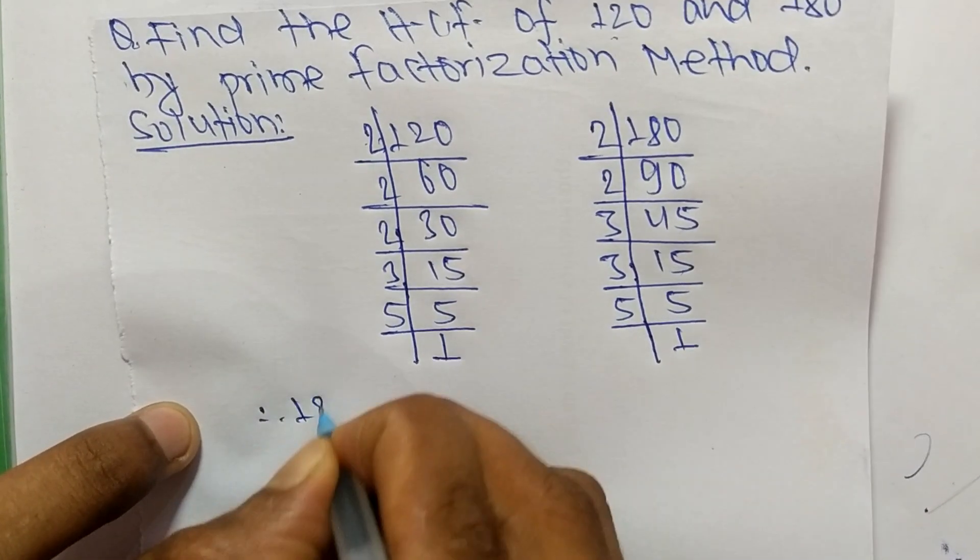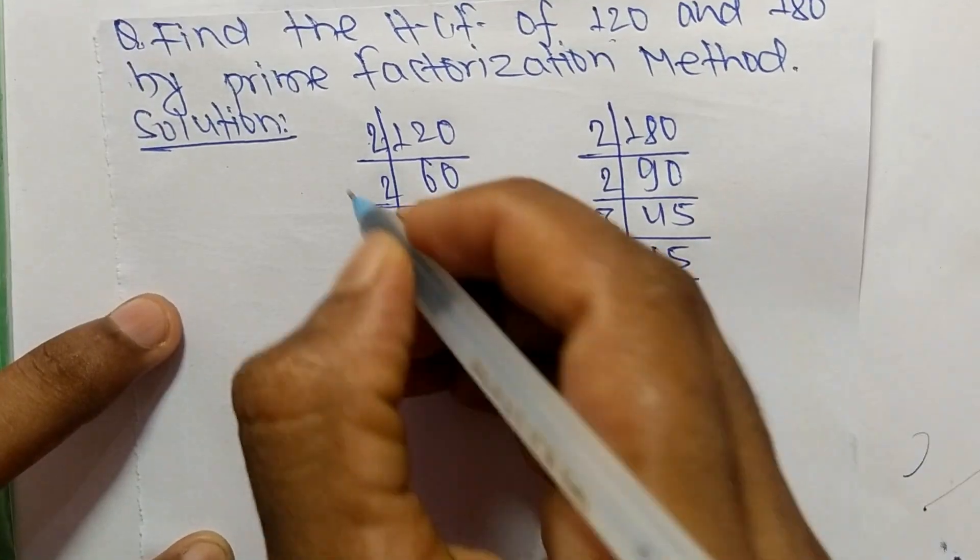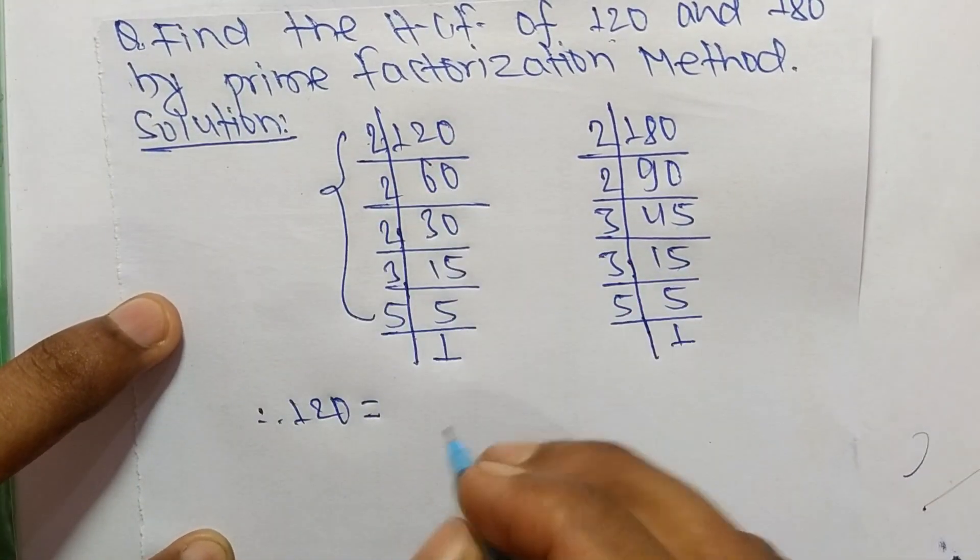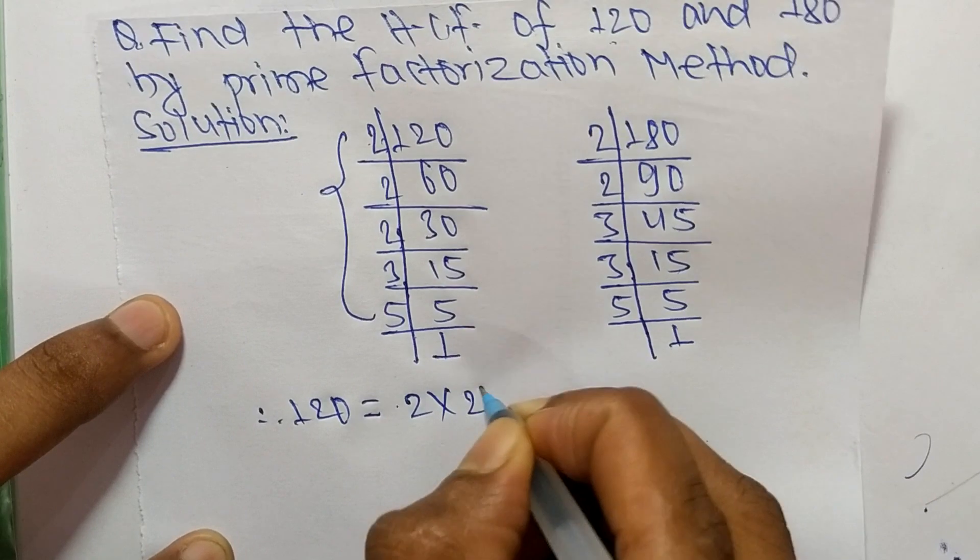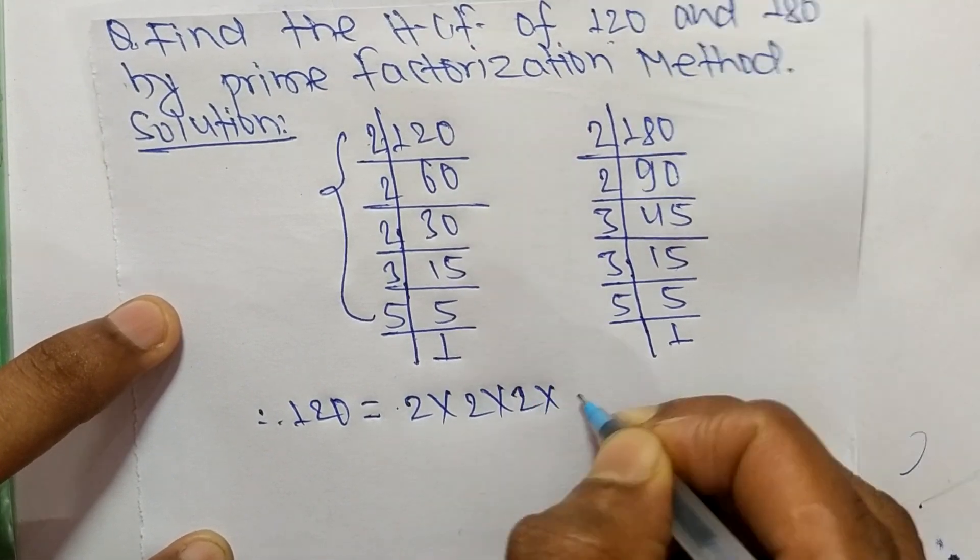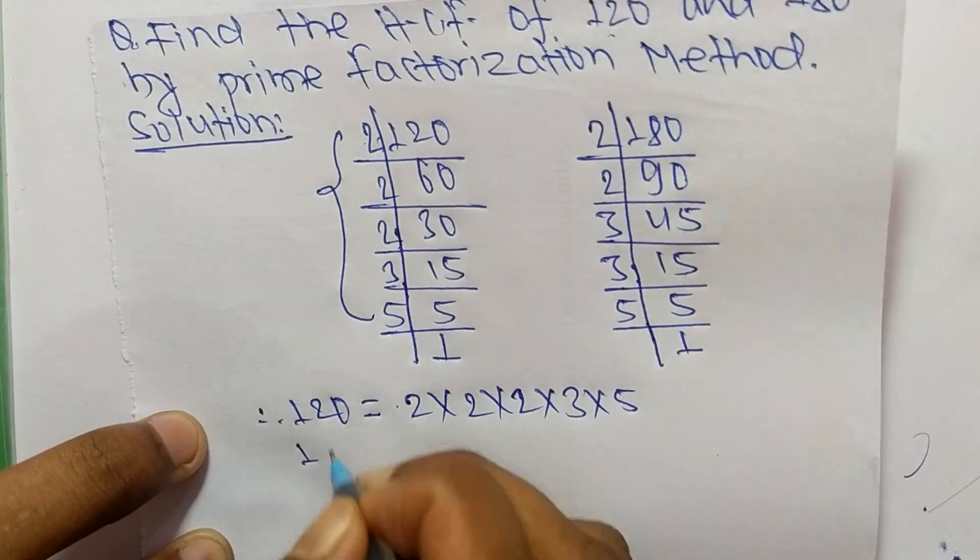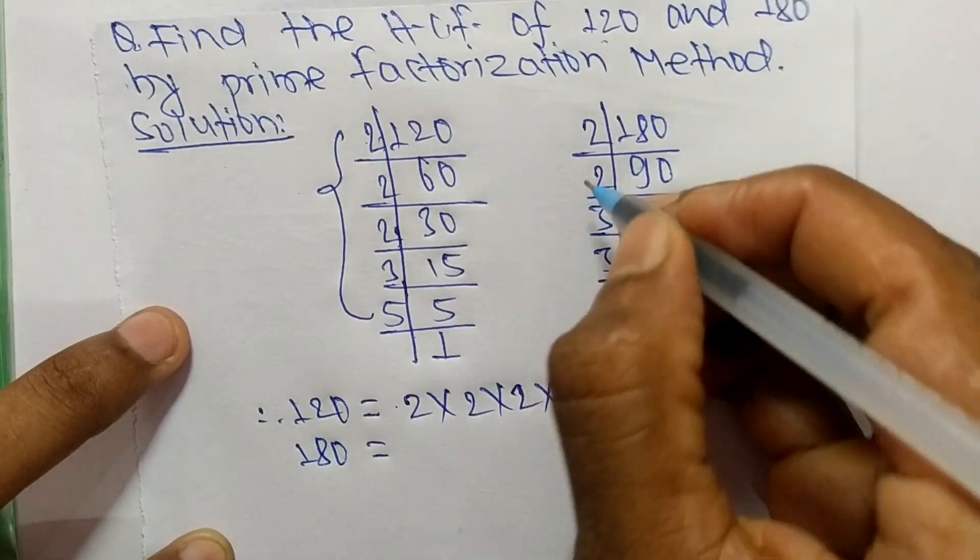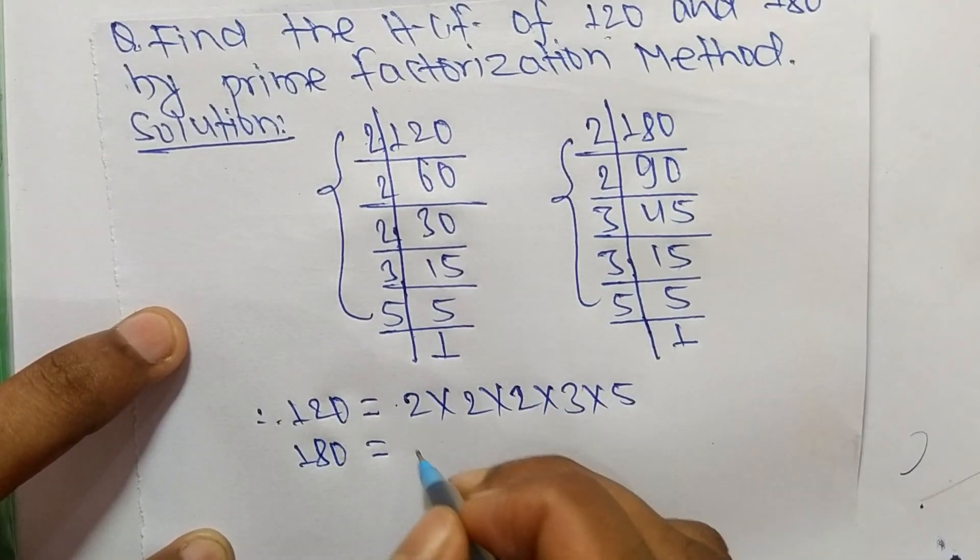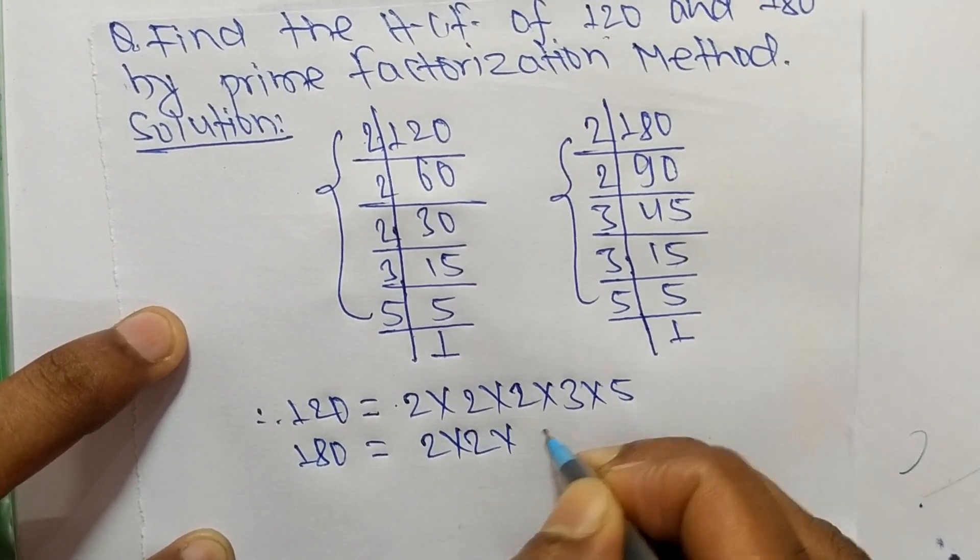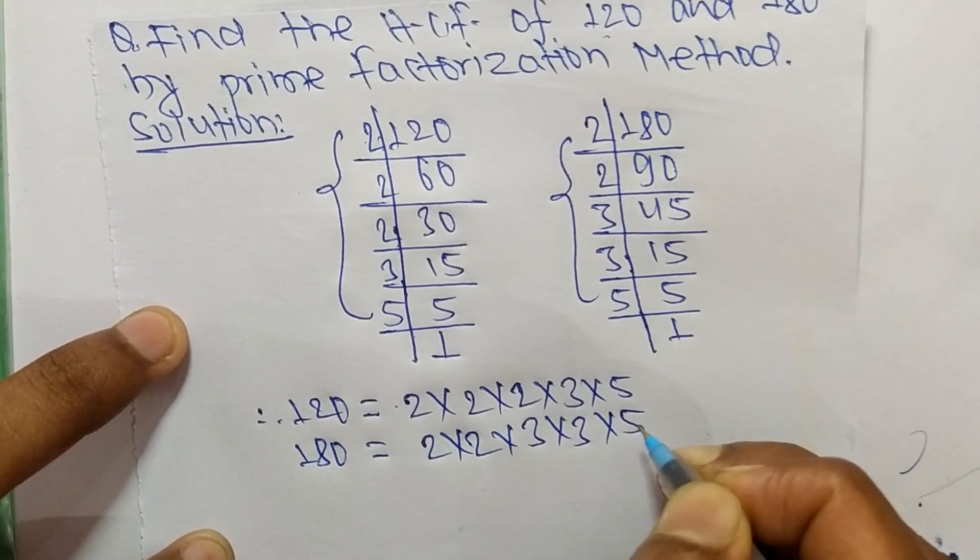From these prime factors we can write 120 equals 2 times 2 times 2 times 3 times 5. Likewise, 180 equals 2 times 2 times 3 times 3 times 5.